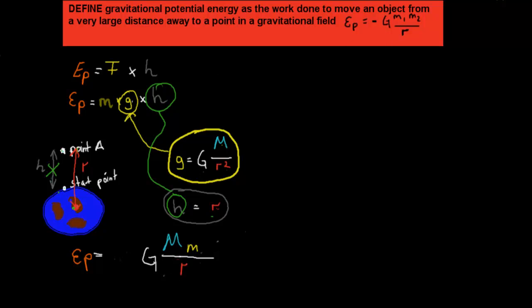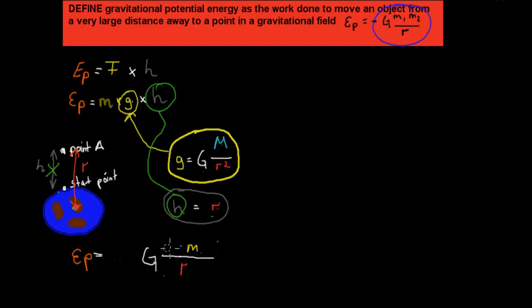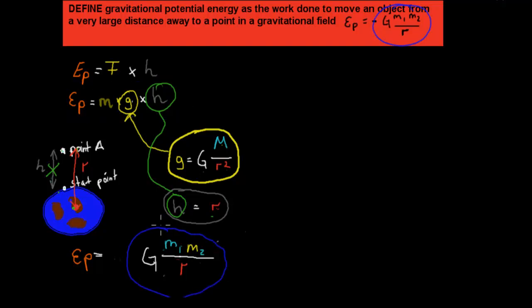Comparing this derived equation with the syllabus formula, they are more or less the same — capital M is just the mass of the planet, which we can call M₁ or M₂. So that's how we go from EP equals mass times gravity times height to the formula used in the actual syllabus dot point. You don't need to derive this, but you will be using it in examples.